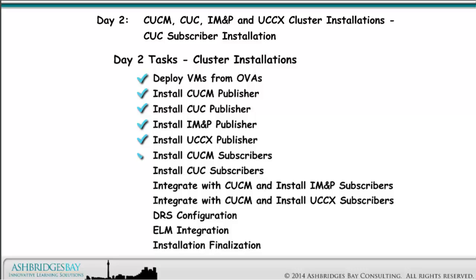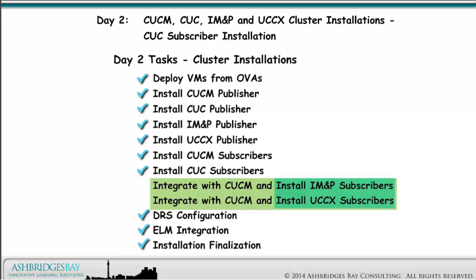We install our CUCM, CUC, IM&P, and UCCX subscribers. We activate the services we need in the CUCM cluster when we install the IM&P and UCCX subscribers, and integrate IM&P and UCCX with CUCM. Then we configure DRS for all four applications, integrate CUCM and CUC with ELM, and do some final tasks like upgrade VMware tools and configure virtual machine startup and shutdown.